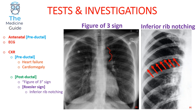If you hear any description relating to a figure-of-three sign or inferior rib notching in a question, that should immediately make you think of aortic coarctation. You can also perform an echocardiogram, and finally a CT angiogram to complete your investigation.